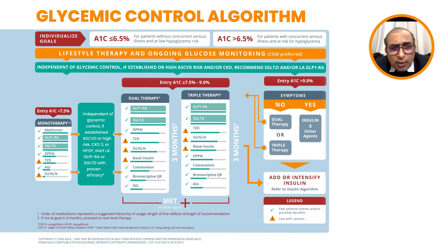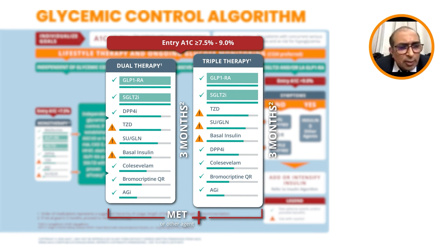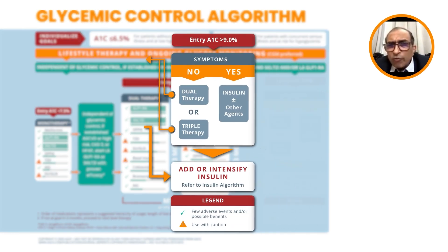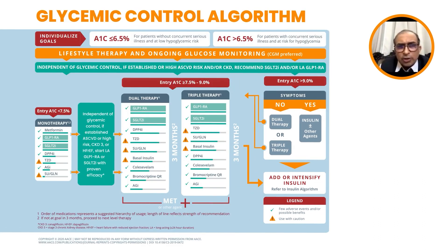When entry HbA1c is between 7.5% and 9%, the suggestion is to use dual or triple therapy right at onset of diabetes — one of them should be metformin, and the other decided based on co-morbidities such as atherosclerotic cardiovascular disease or renal disease. If HbA1c is more than 9%, the ACC suggests use of insulin right at onset, or triple therapy. If the patient is symptomatic with hyperglycemia — weakness, tiredness, or significant weight loss — insulin is suggested right at the onset of diabetes.